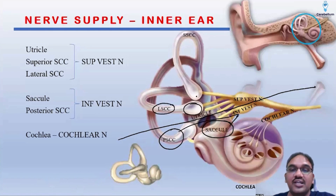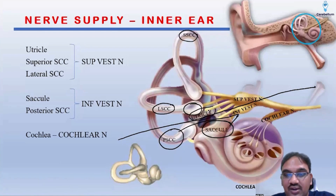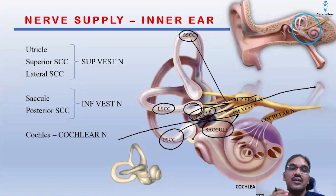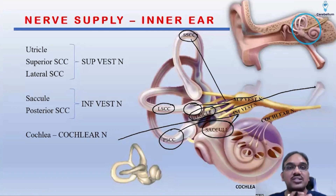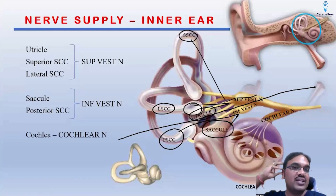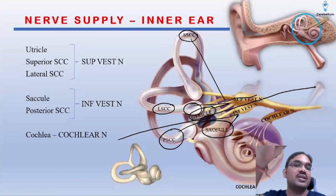From the lateral semicircular canal — the cristae in the ampullated end — the superior semicircular canal, and the utricle: from these three structures, the information is carried through the superior vestibular nerve. If you remember the anatomical orientation of the inner ear, it is easy to remember which nerve carries sensation from which part. The superior semicircular canal is lying superiorly, the lateral semicircular canal and the utricle are on the higher side posteriorly, and from these three structures, the superior vestibular nerve arises and goes inside.